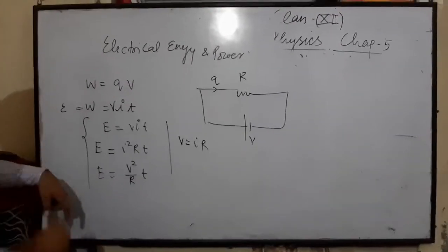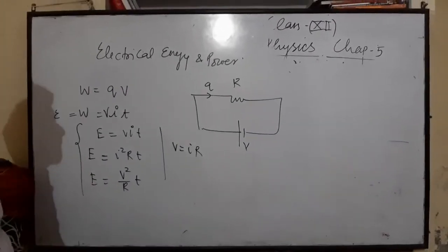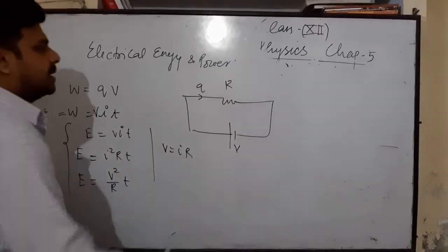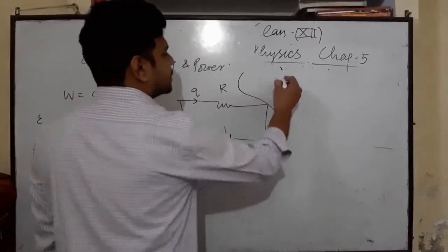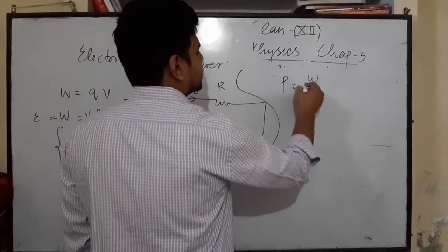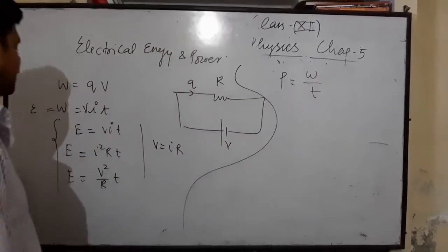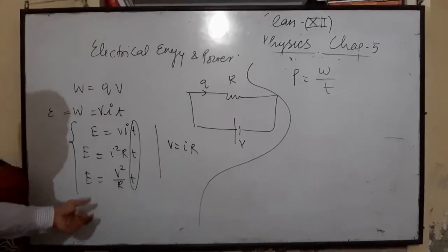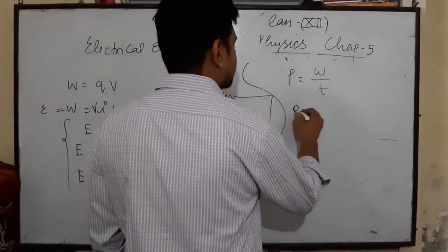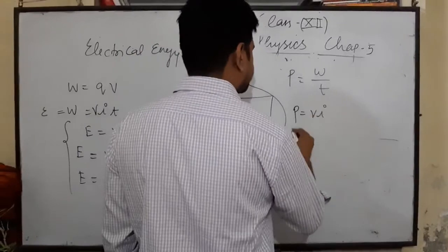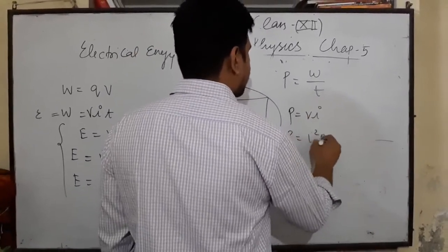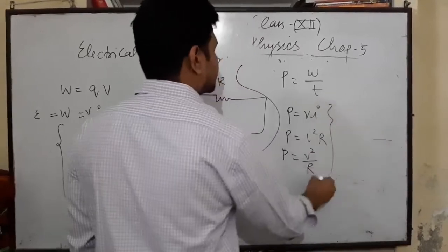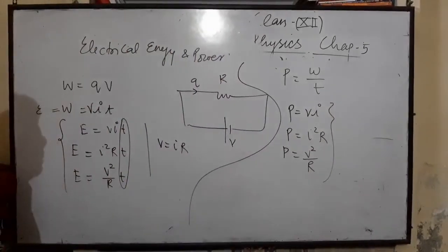These are the expressions for electrical energy spent by a battery in the circuit. If we want to calculate the power of the circuit, we know that power P = W/T. So removing T from the energy formula, the power P = VI = I²R = V²/R.